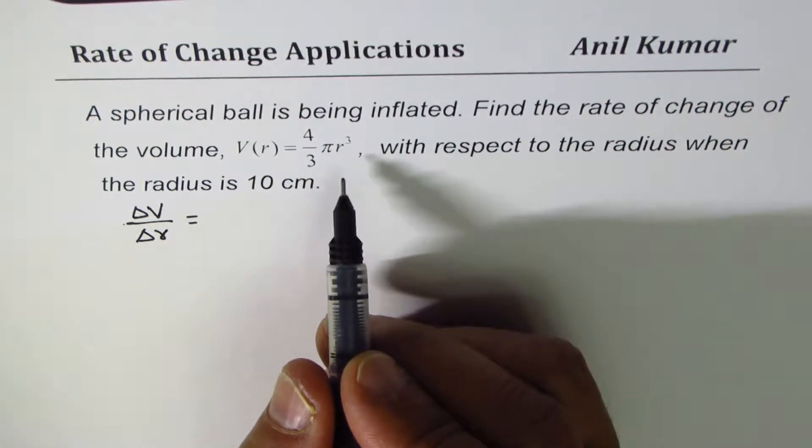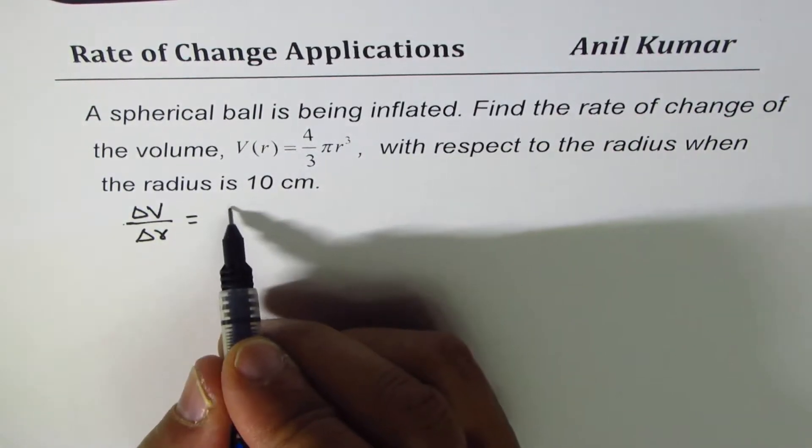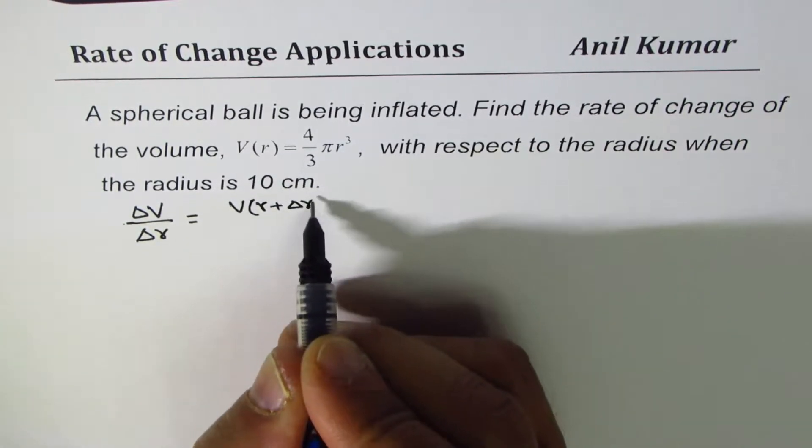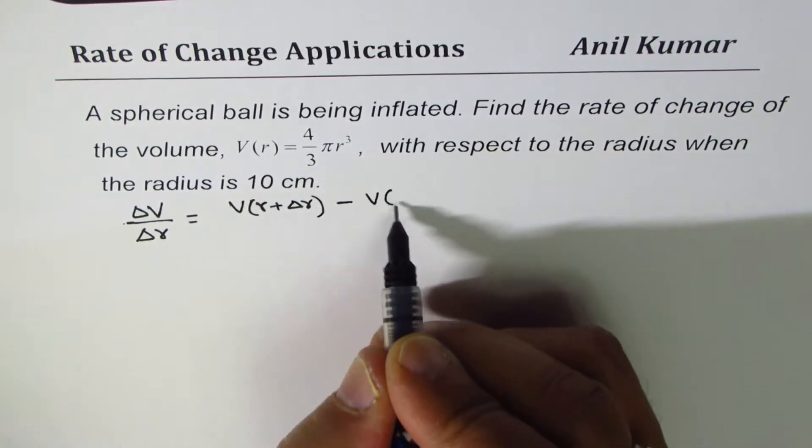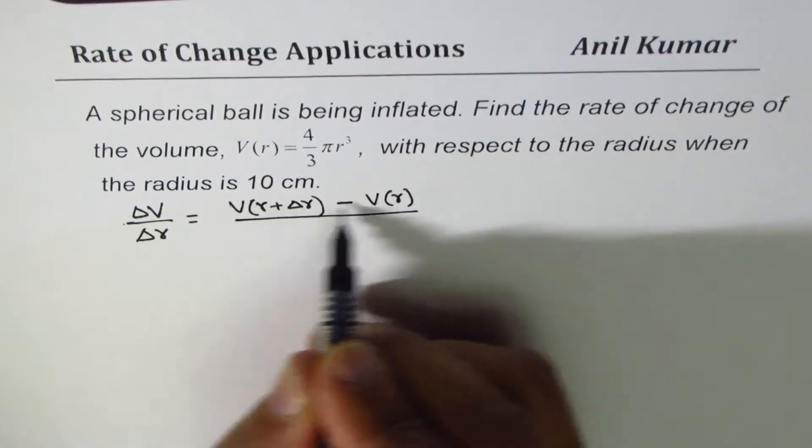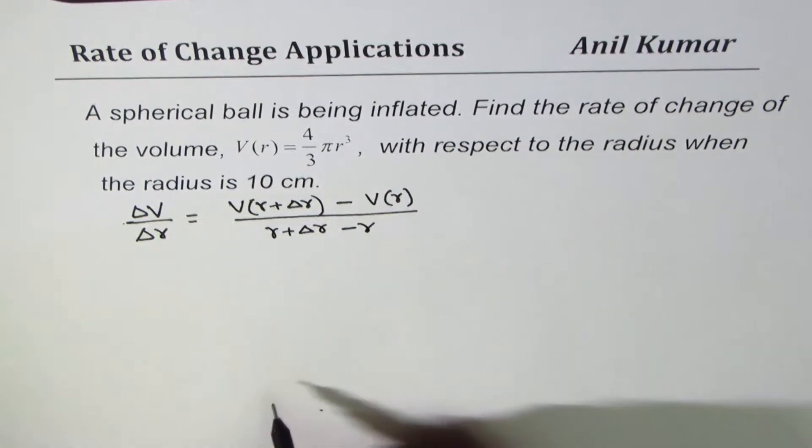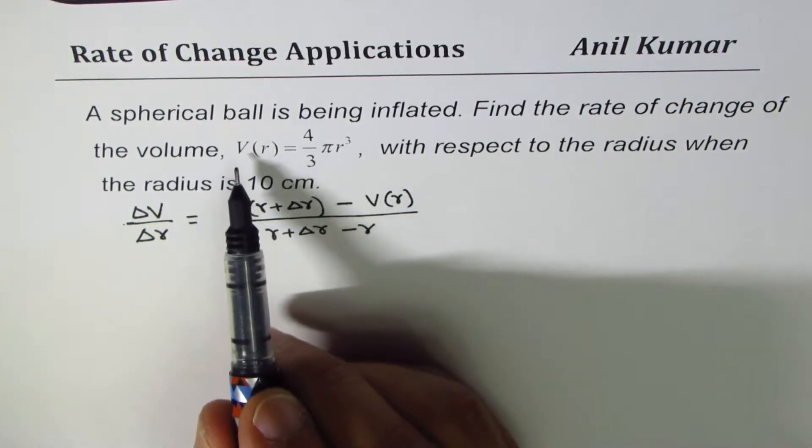So the volume expression we can write as volume when the radius is R + ΔR minus volume when the radius is R, and change in radius will be R + ΔR minus R.